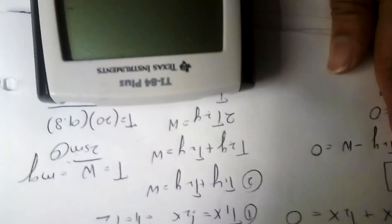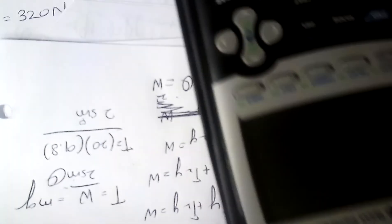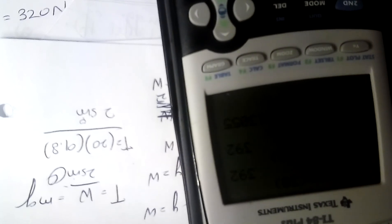Let me just solve it by the calculator. So 20 into 9.8 divided by 2 divided by sine 60.